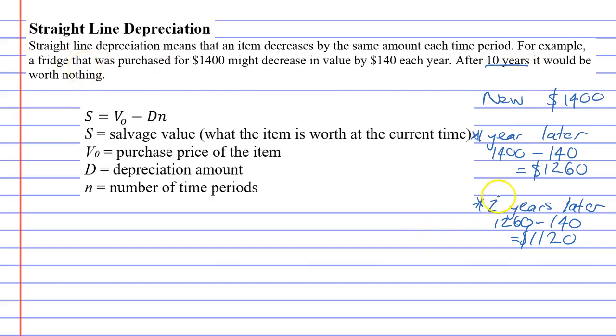Alright. Now, let's talk a bit about terminology. We have our formula, S equals V₀ minus DN. And this basically means S equals V₀ minus D times N. Remembering that two pronumerals next to each other means multiplication.